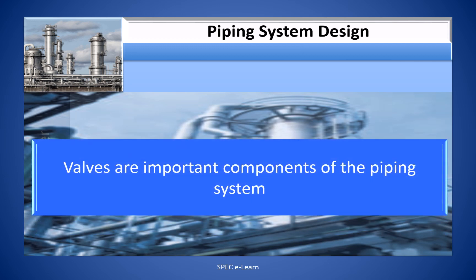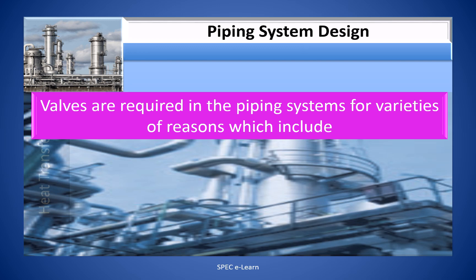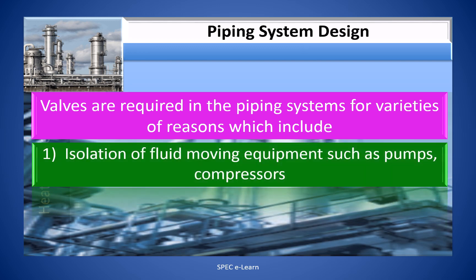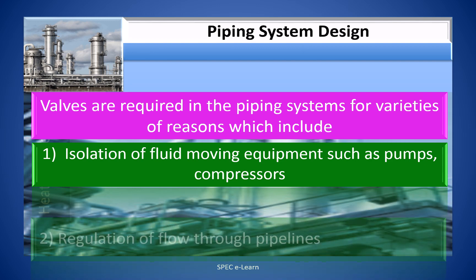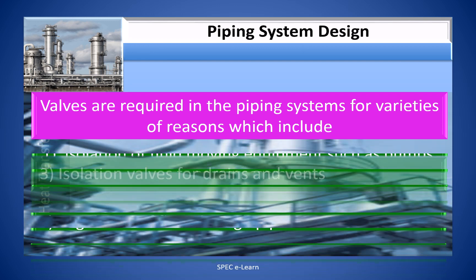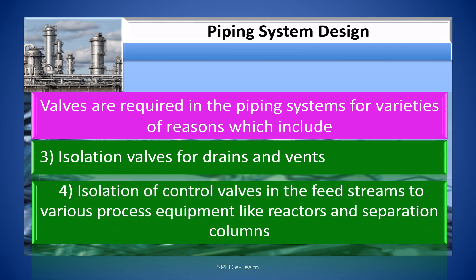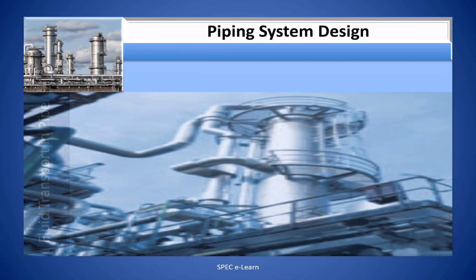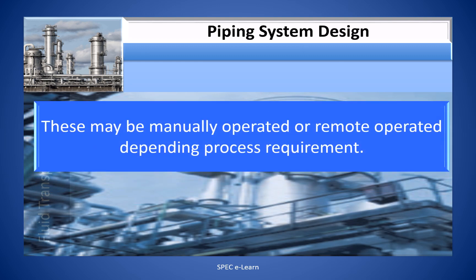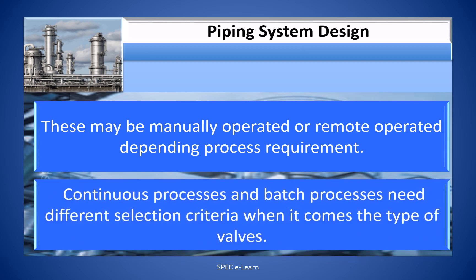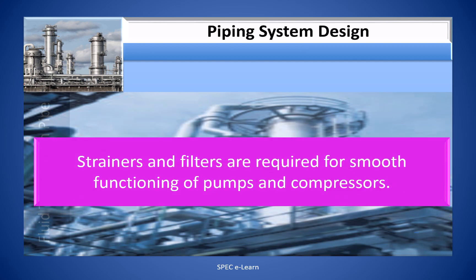Valves are important components of the piping system and are required for a variety of reasons, which include: isolation of fluid moving equipment such as pumps and compressors; regulation of flow through pipelines; isolation valves for drains and vents; and isolation of control valves in feed streams to process equipment like reactors and separation columns. These may be manually operated or remotely operated depending on the process requirement. Continuous and batch processes need different selection criteria when it comes to valve type. Strainers and filters are also required for smooth functioning of pumps and compressors.